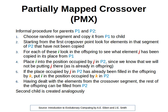Then we start at the first crossover point. We look for elements in the corresponding segment of P2 and find the elements which have not been copied yet. For each of these elements — we call them I elements — we look in the offspring, in the child, to see what element J has been copied in its place from P1. So the I elements are the elements in the segment in P2 which have not been copied yet, and we find the corresponding J elements that were copied into those positions from P1.